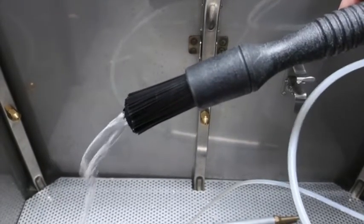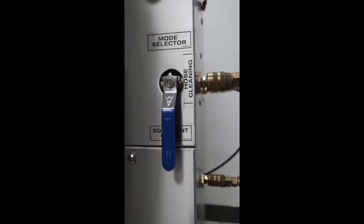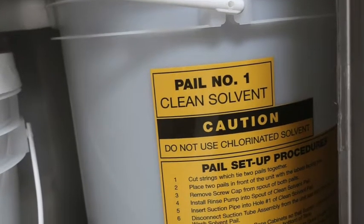The solvent that comes out of your wash brush, and the solvent that gets pumped through the hose in the hose cleaning cycle. The clean pail supplies fresh solvent through all of the jets in the tank when you use the clean rinse buttons after a wash cycle.